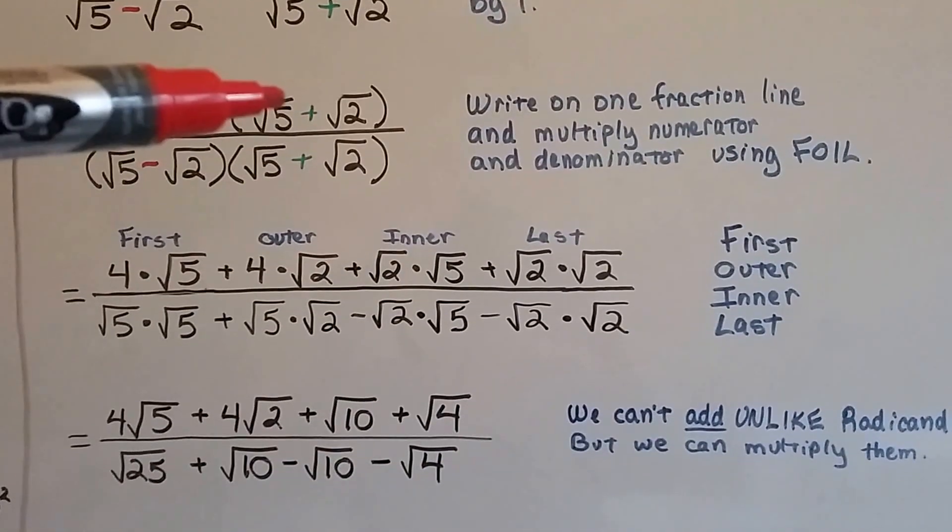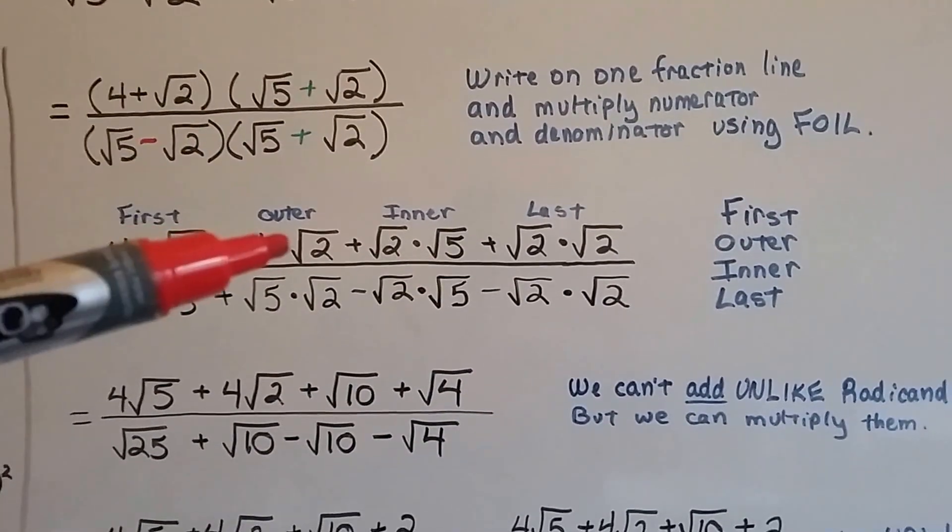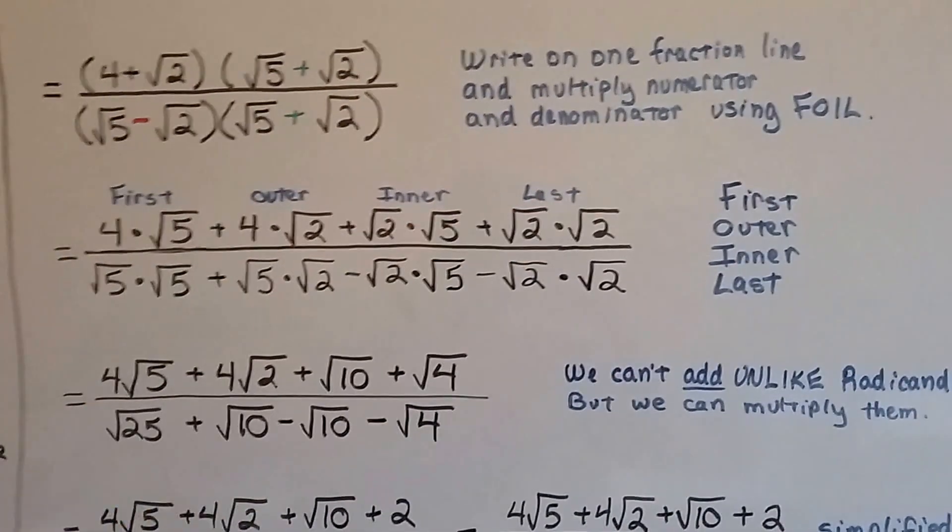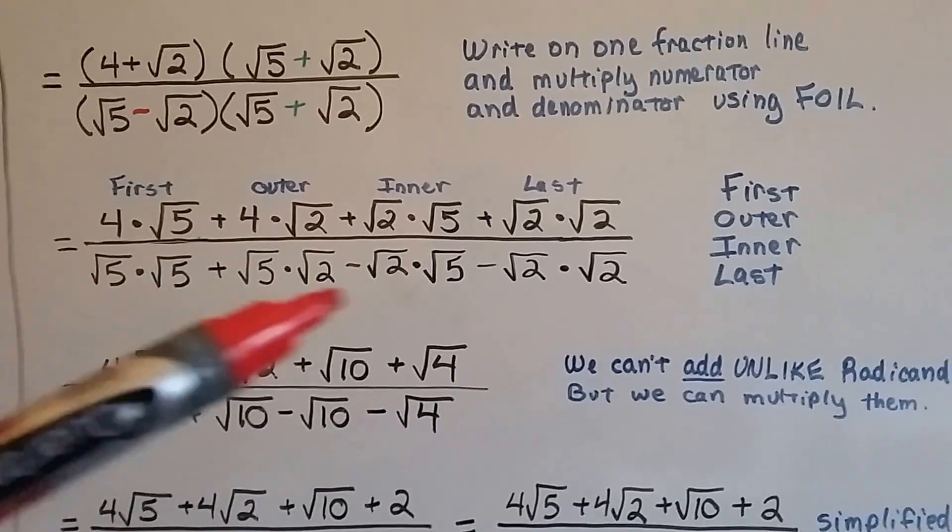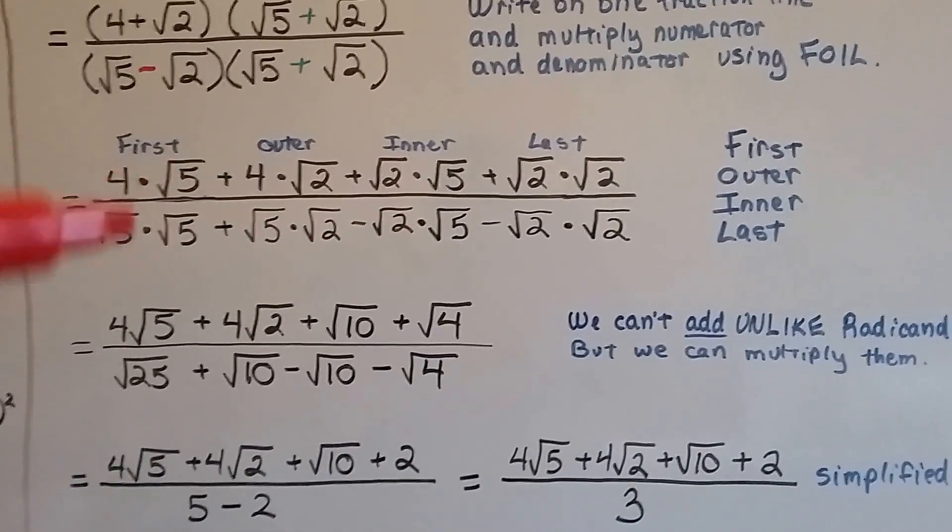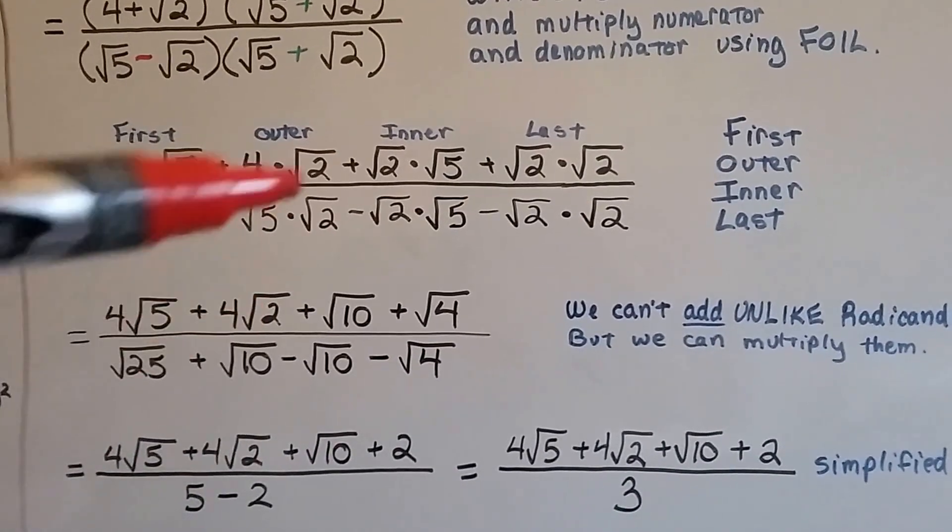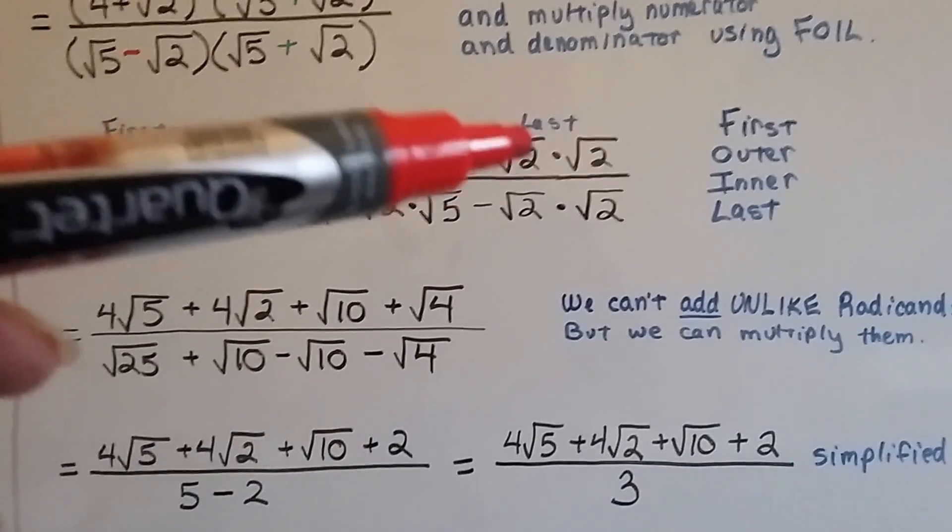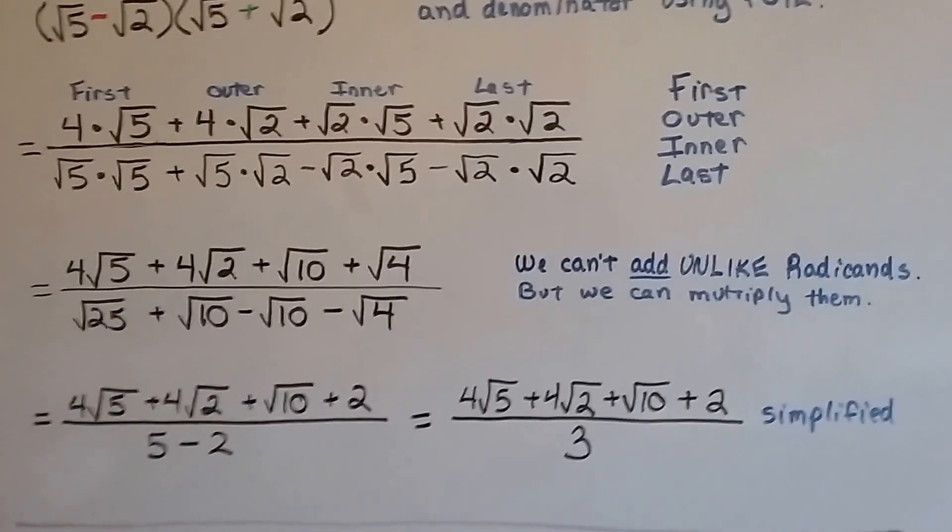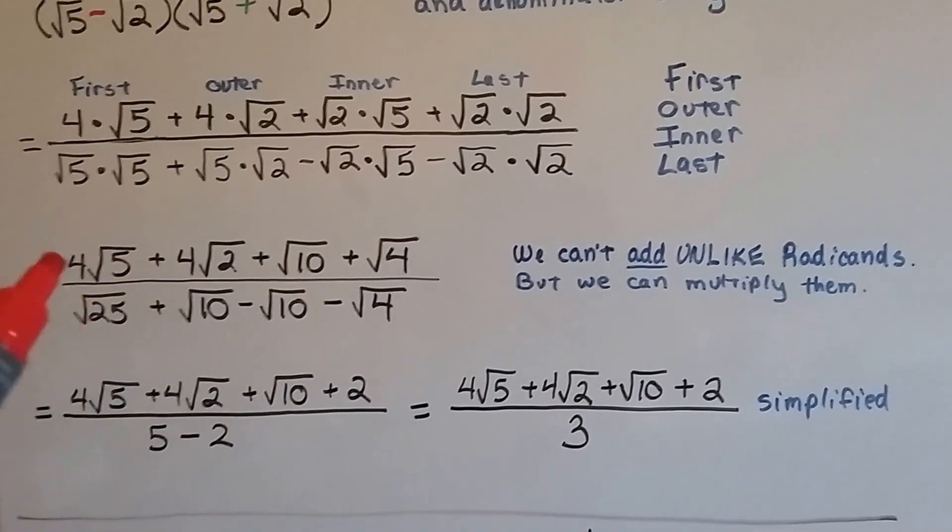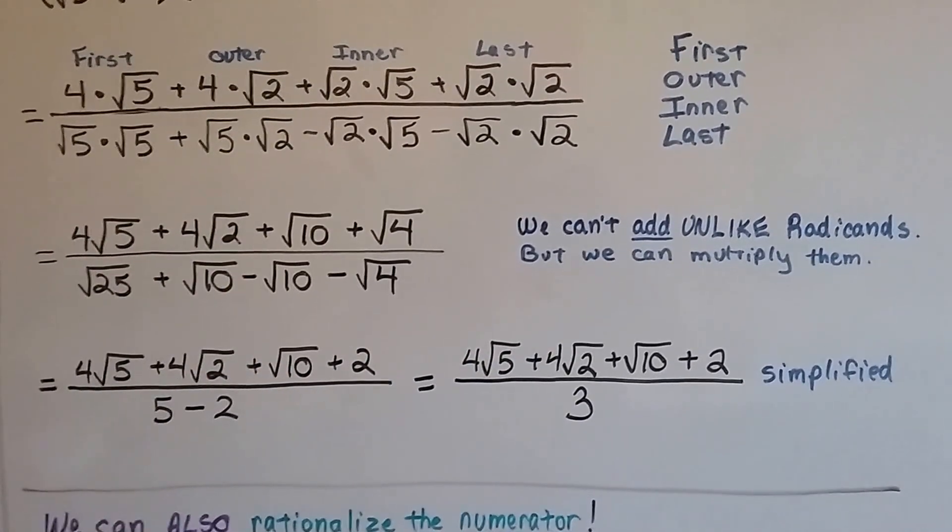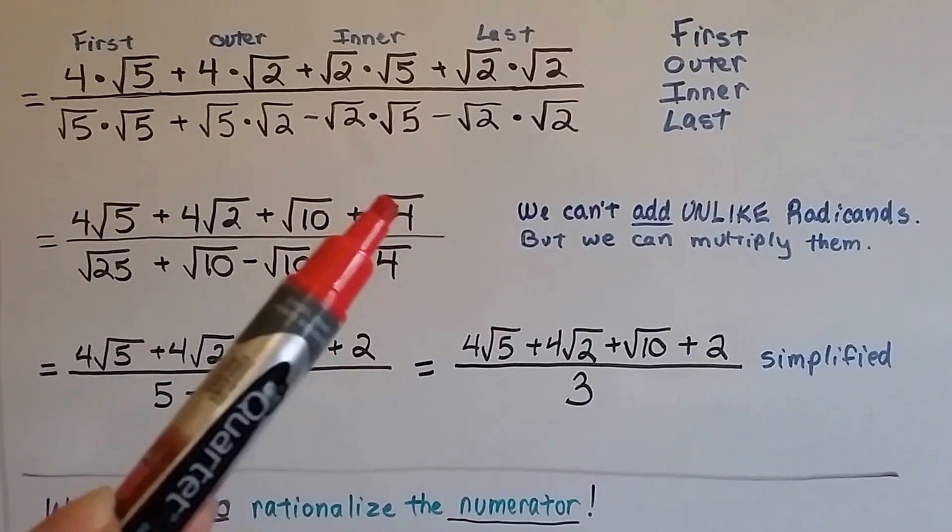This is going to give us 4 times the square root of 5, 4 times the square root of 2, the square root of 2 times the square root of 5, and the square root of 2 times the square root of 2. We do the same thing for the denominator. And we get this nice, big, long thing that needs to be simplified. And this is just 4 times the square root of 5, this is 4 times the square root of 2. The square root of 2 times the square root of 5 is the square root of 10. And the square root of 2 times the square root of 2 is the square root of 4. Now, we can't add unlike radicals. We can multiply them, but we can't add them. So we can't say this is 8 and the square root of 10 because this is addition here. We can't add these unlike radicals.